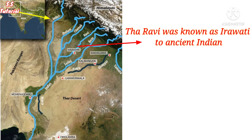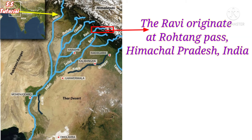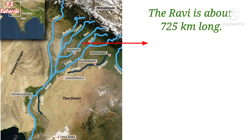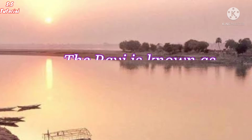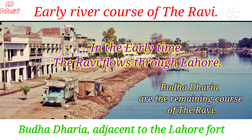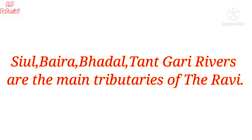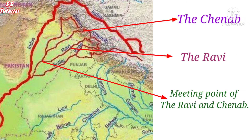The Ravi river, also known as Iravati to ancient Indians, originates from the northern face of the Rohtang Pass in Himachal Pradesh. It is about 725 kilometers long and is known as the river of Lahore, as the Ravi flows past Lahore in Pakistan. The river Ravi changes its course over time — Budha Dariya is the remains of the old course of the river when it passed adjacent to the Lahore Fort. The Seul, Baira, and Tangri rivers are the main tributaries of the Ravi. The Ravi finally joins with the Chenab river.